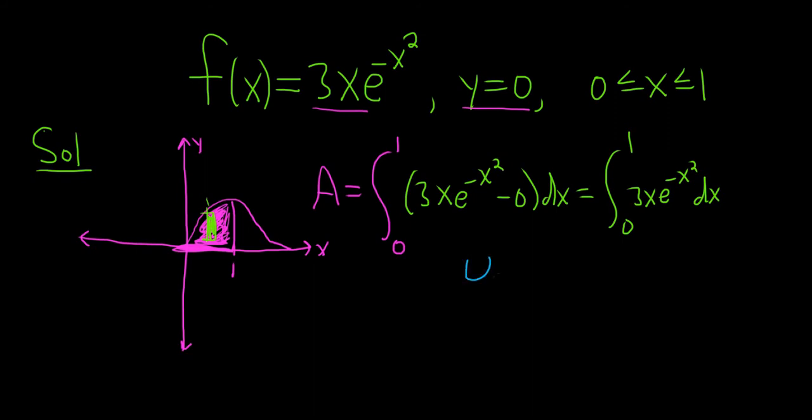So you would make a u substitution. You would let u be equal to negative x squared, and then you would compute du, so du is negative 2x dx. Now there's a negative 2x here, and there's a 3x here, so if you multiply both sides by negative 3 halves, you can fix it.